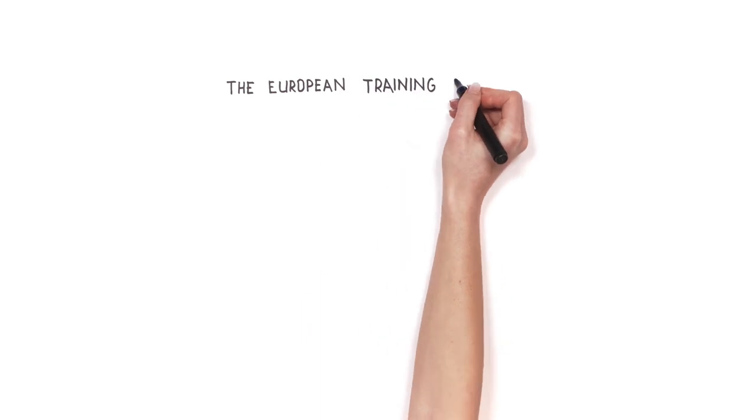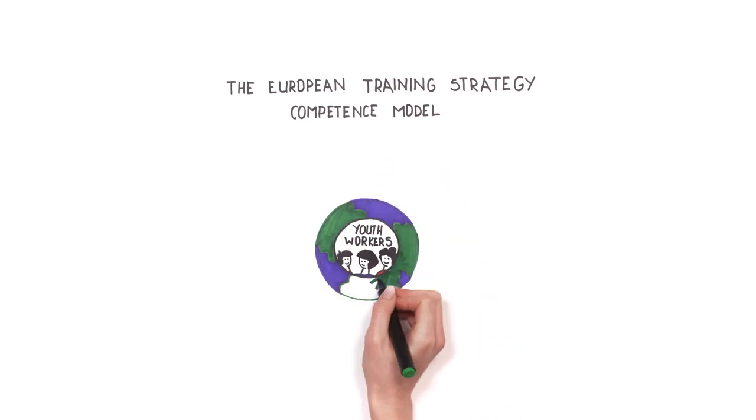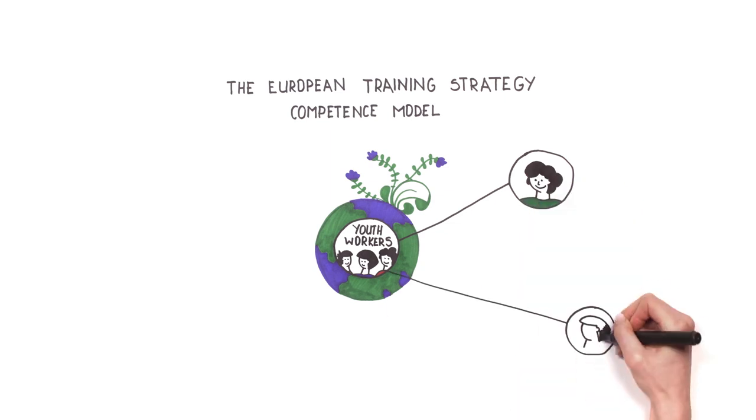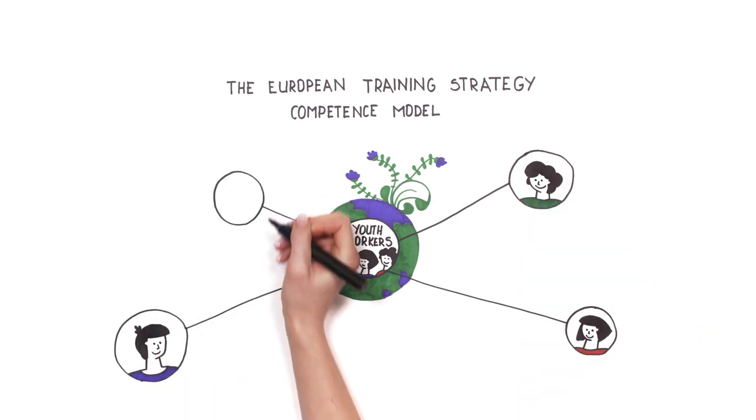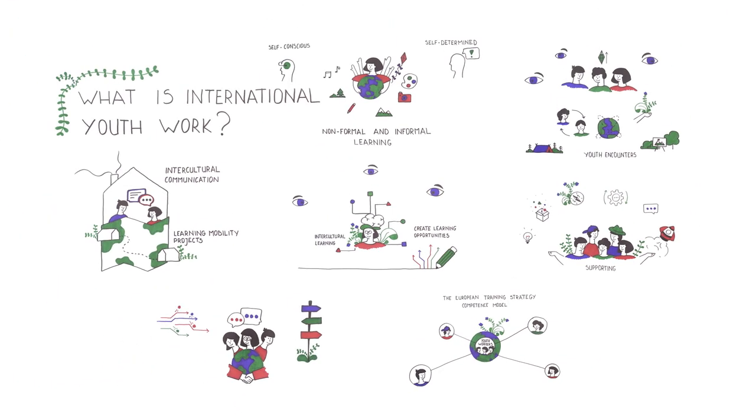The European Training Strategy Competence Model for Youth Workers Working Internationally makes some of these international youth work settings more explicit. It focuses, for instance, on working in international teams and on supporting young people in international learning mobility projects. We invite you to check it and explore diverse ways of assessing and developing these competencies.